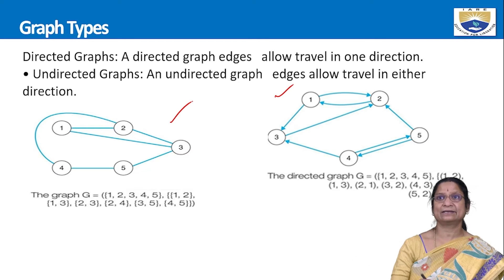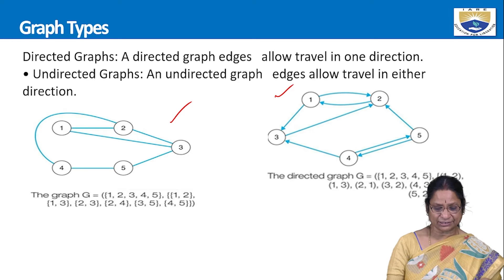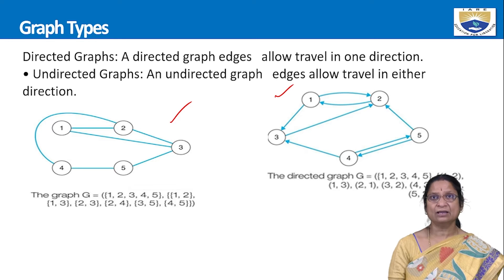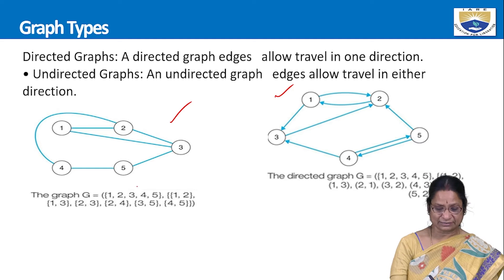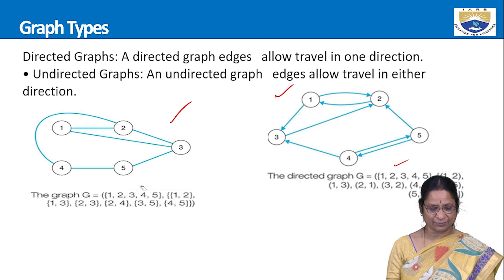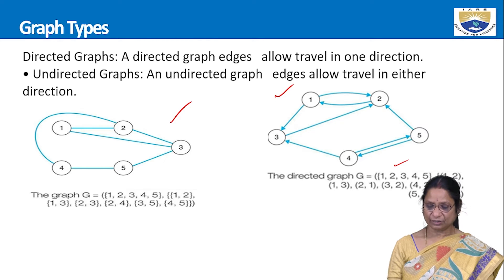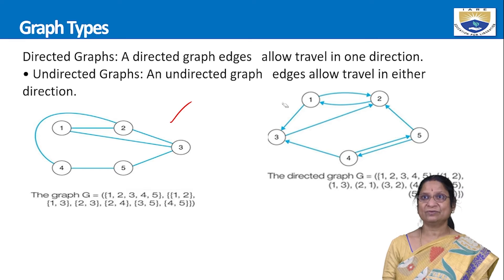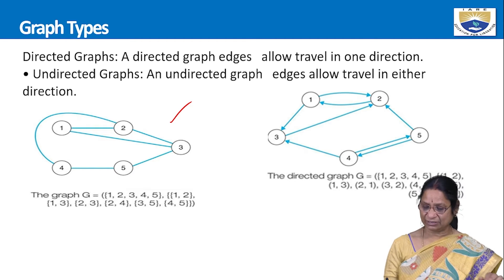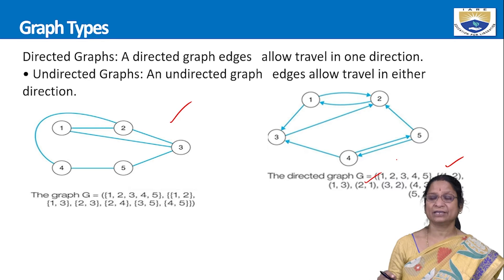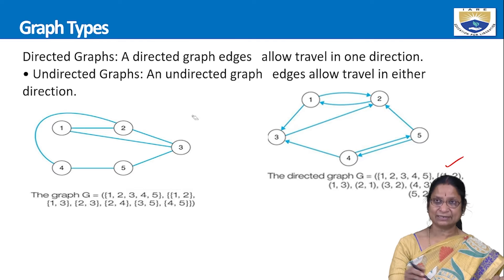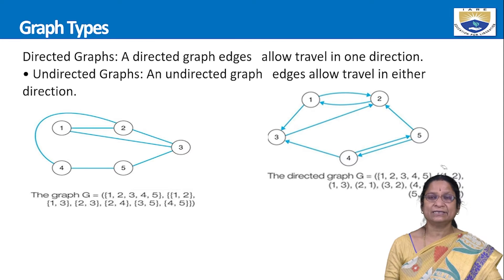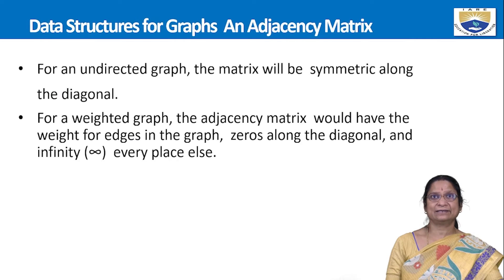Two example graphs are given: one directed, one undirected. Both have five vertices. In the undirected graph, edges include 1-2, 2-3, 1-3, 3-5, 5-4, and 5-2. In the directed graph, there are two edges between vertices 1 and 2 — both 1→2 and 2→1 — because order is important. When an edge is represented as an ordered pair, it is a directed graph.